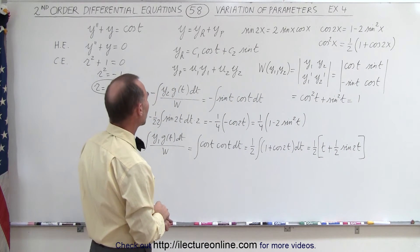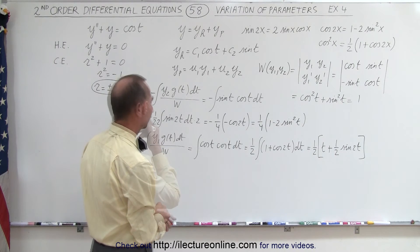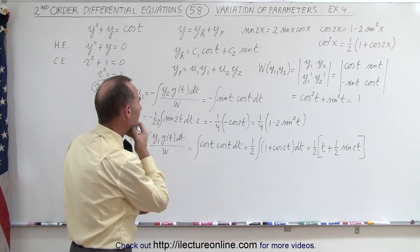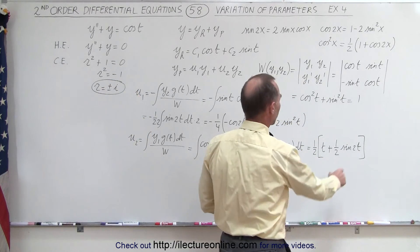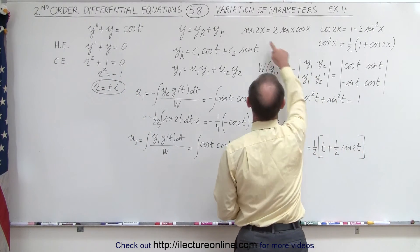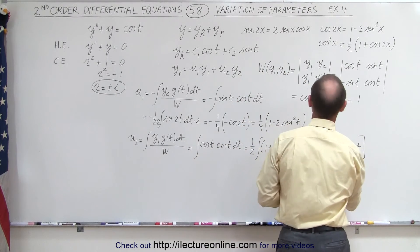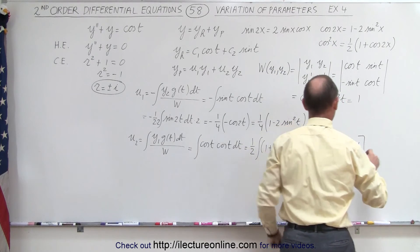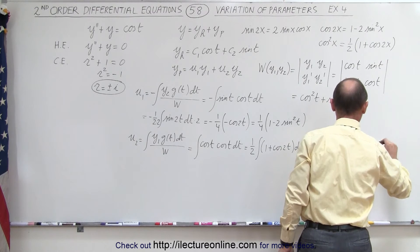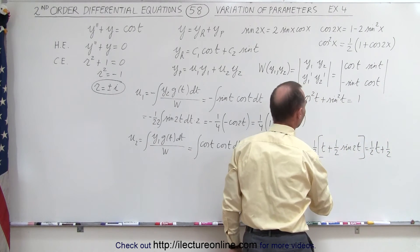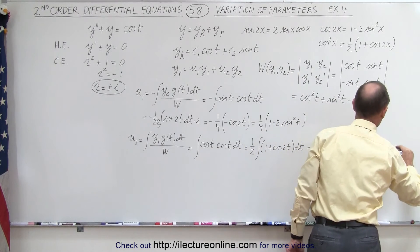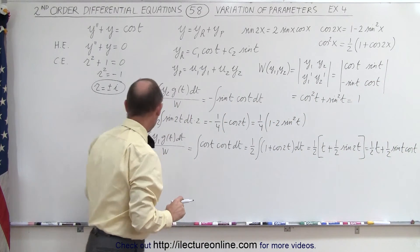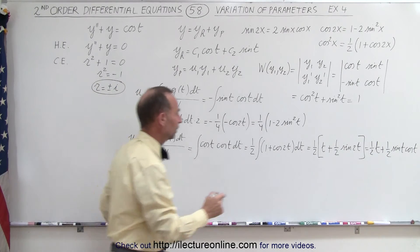Integrating, we get one half times t plus one half times sine of 2t. Now, replacing sine of 2t with twice sine of t cosine of t, and the one half factors cancel, so u2 equals one half t plus one half sine of t cosine of t. That's a good form. So we now have both u1 and u2.